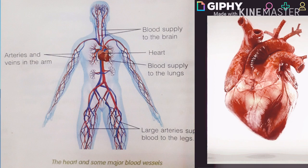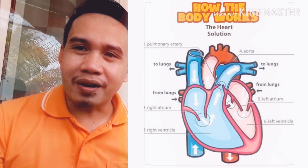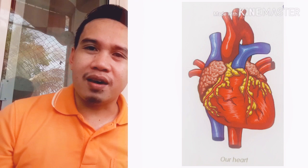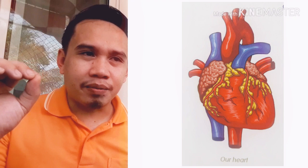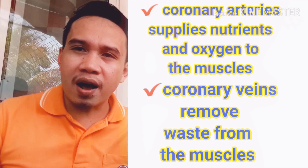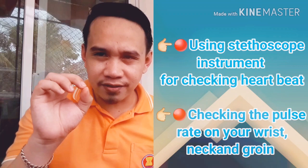The human heart is a muscular organ with walls made of cardiac muscles. The coronary arteries supply nutrients and oxygen to the muscles, while the coronary veins remove wastes from the muscles. Blood pressure varies from person to person depending on age, sex, body size, mental condition, activity, and exercise.